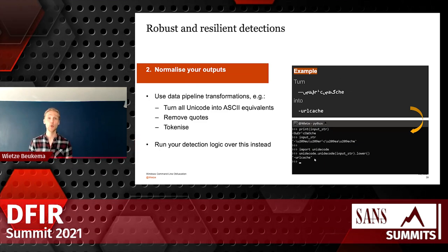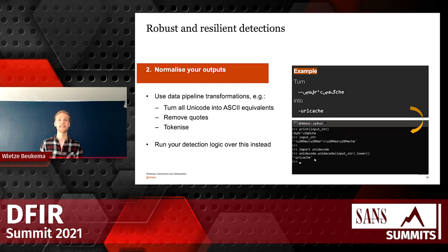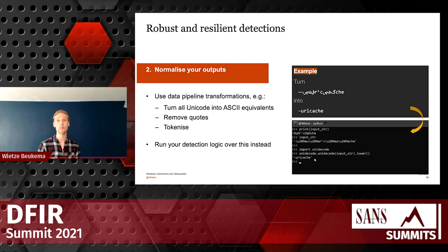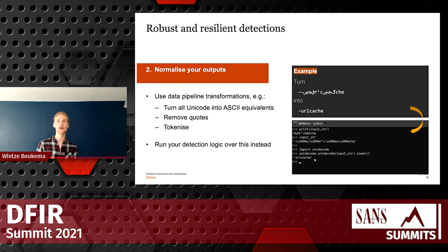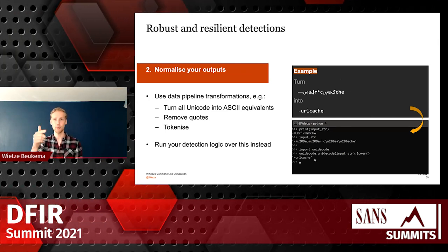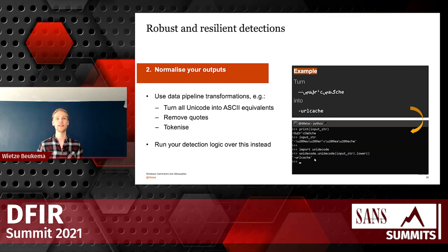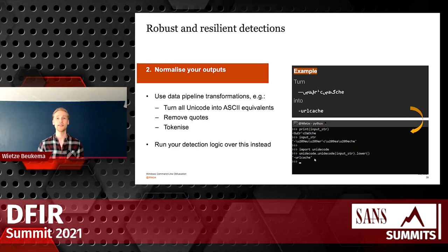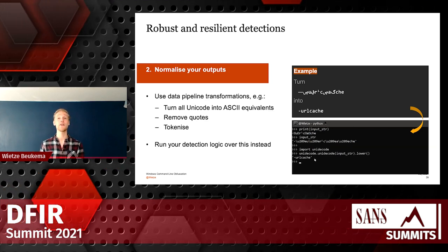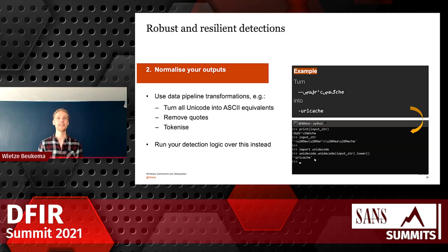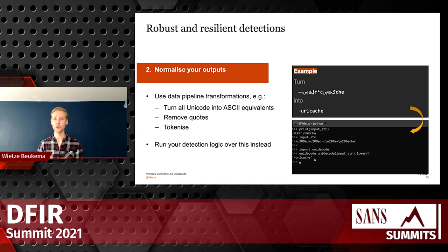My second recommendation: normalize your outputs. Keep the original command line, but also create a separate field where the command line is de-obfuscated. On screen is a working command line for certutil with a special Arabic dash, random Arabic characters, replaced Unicode characters — it still works. But what you want to see as an analyst is just: dash urlcache. It turns out that even in Python with a simple one-liner — import a special module, run it over the string — you get something way easier to understand. Run your detection logic against that normalized field as well. Even if someone tries to obfuscate it, your normalized field might still get hits on alerting. Get rid of Unicode, get rid of quotes, tokenize — normalize your outputs.